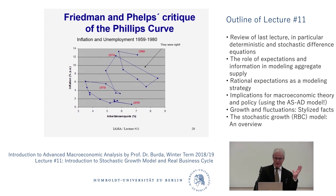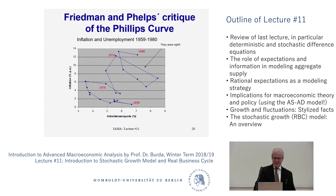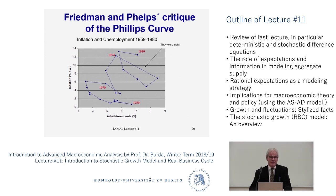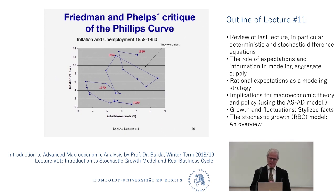And they were right. The relationship did deteriorate. Countries around the world were printing lots of money, creating lots of money, and the economy was moving fast. People's expectations were being ratcheted up because they knew governments would try to avoid unemployment by creating more demand and financing it with money creation. So the 1970s was a big challenge for economists, and Friedman and Phelps actually got it right.